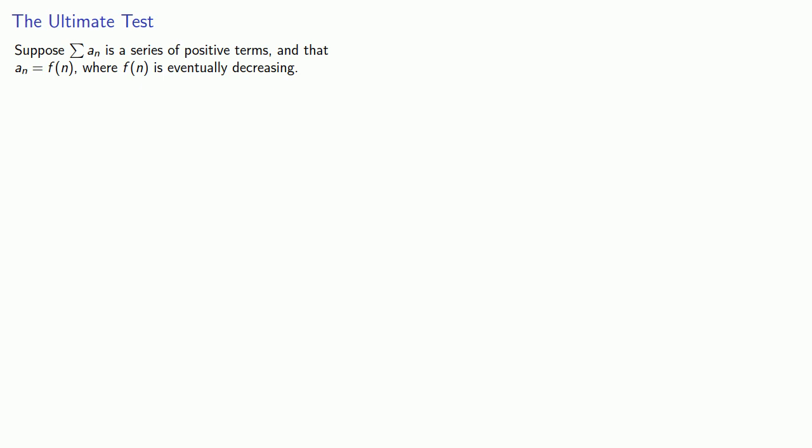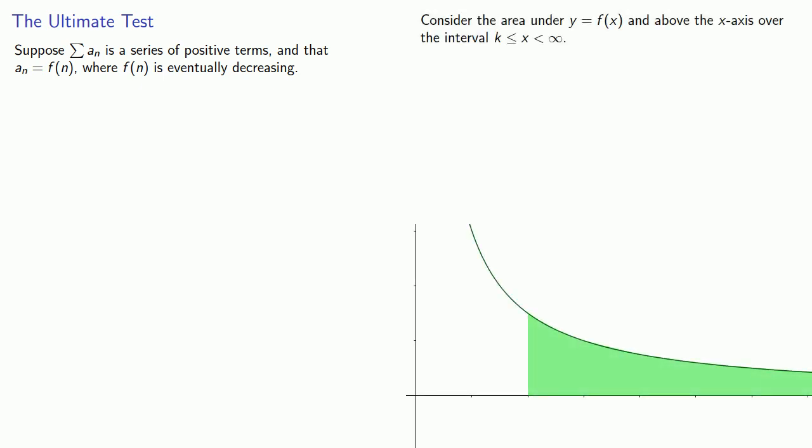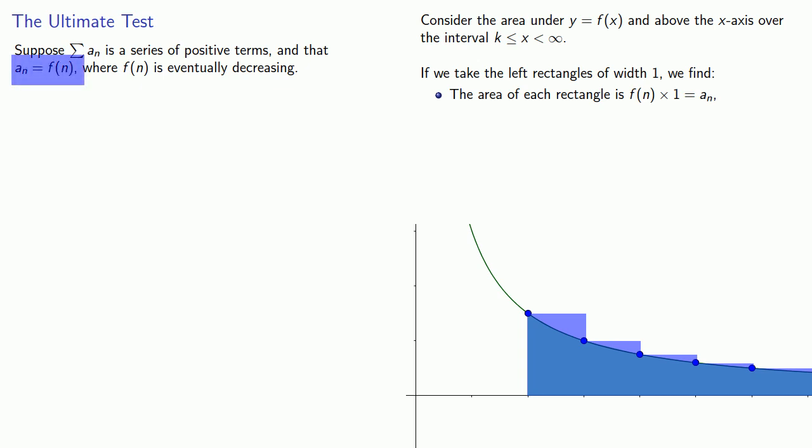So let's focus on the section where the function is eventually decreasing. Take some sufficiently large k. Consider the area under y equals f of x and above the x-axis over the interval from k to infinity. If we take the left rectangles of width 1, we find the area of each rectangle is f of n times 1. Or since a sub n is f of n, then the area of this rectangle is going to be a sub n.